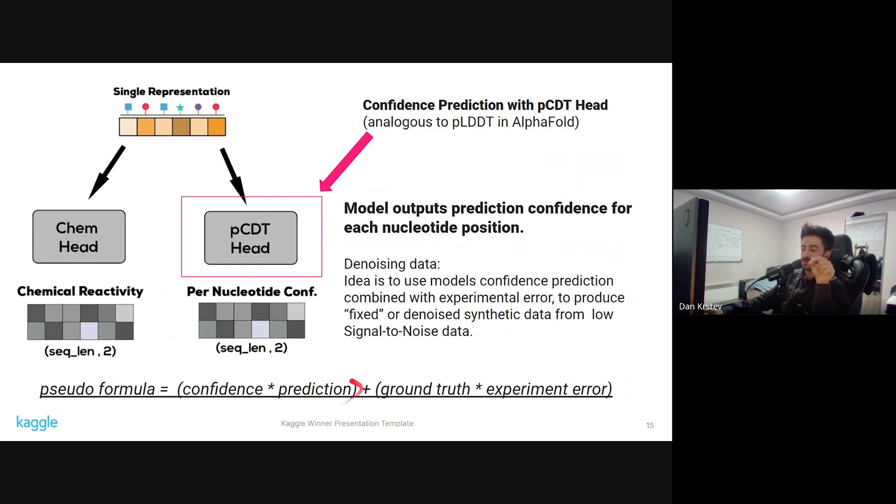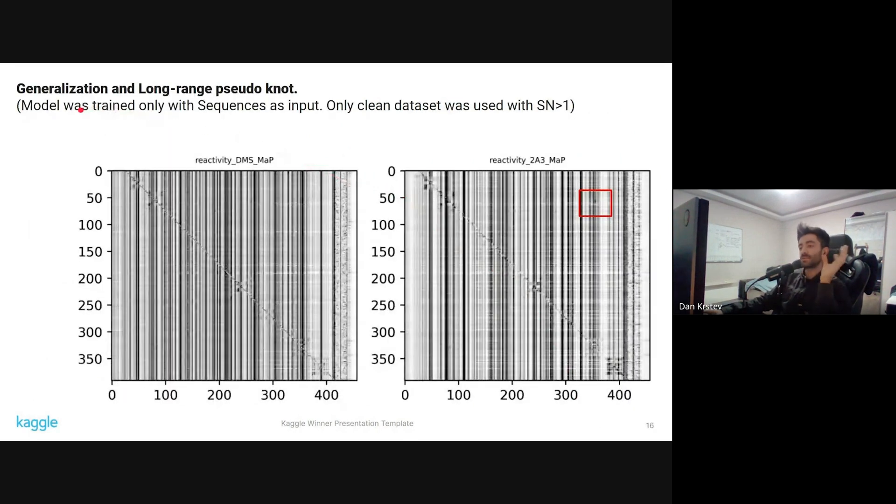This is the generalization plot and the long-range pseudoknot. As I said, this model was trained only with sequences as input. No other additional features were used, and only on the clean dataset, so around 380,000 samples. We can see also that this model can find the long-range pseudoknot, even though it is a bit faint, and it can detect all of the other interactions.